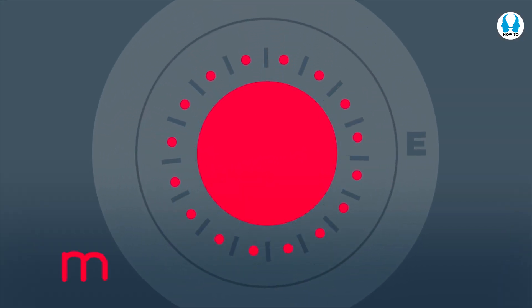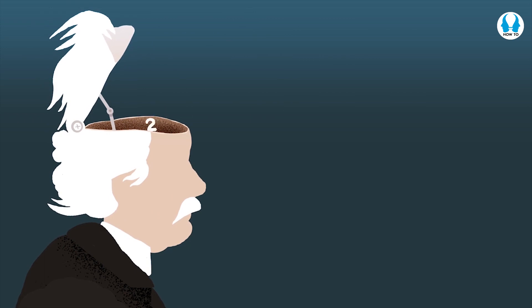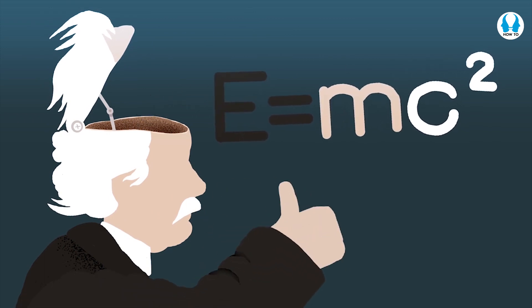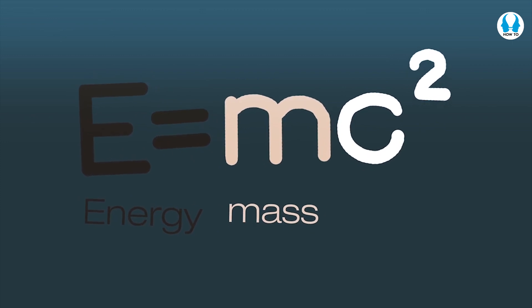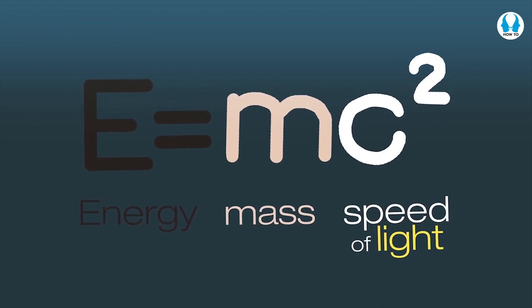In these reactions, a small amount of the mass is converted into energy. The conversion is outlined in Einstein's famous equation, E equals MC squared. Here, E is the energy released, M is the missing mass that has changed into energy, and C is the speed of light.